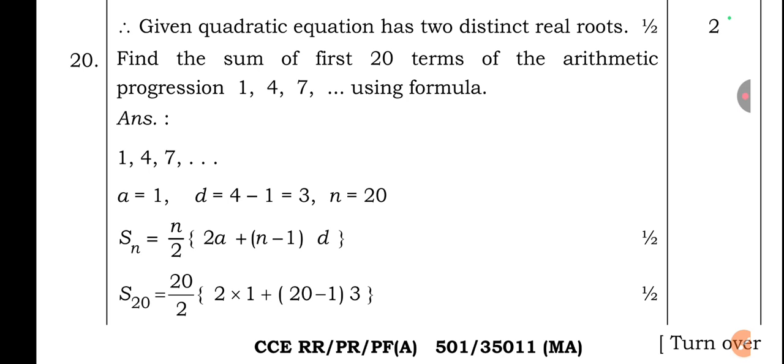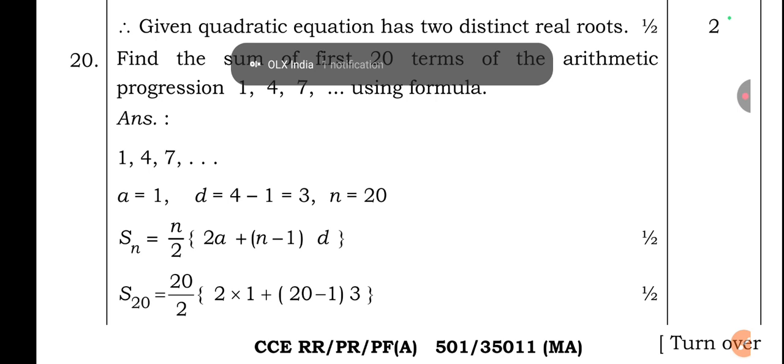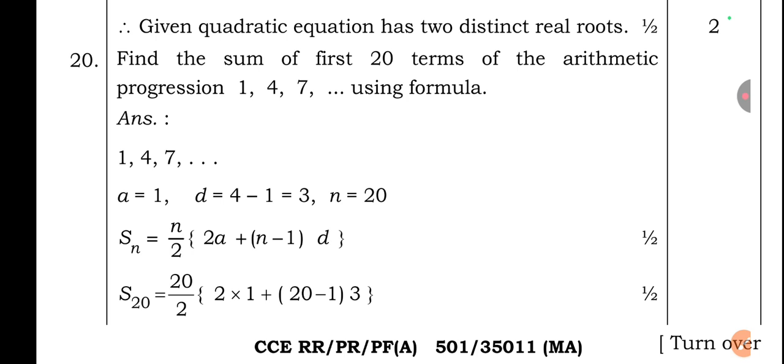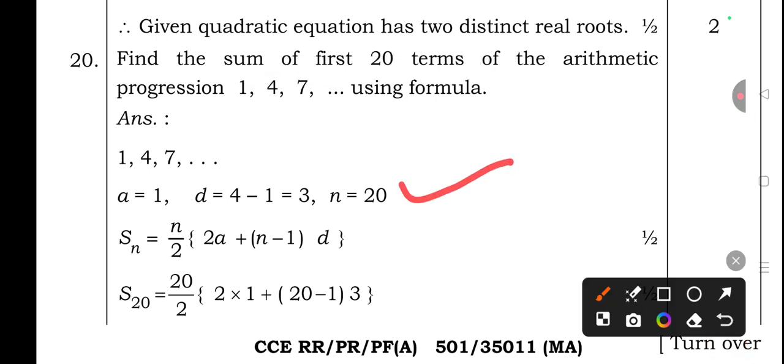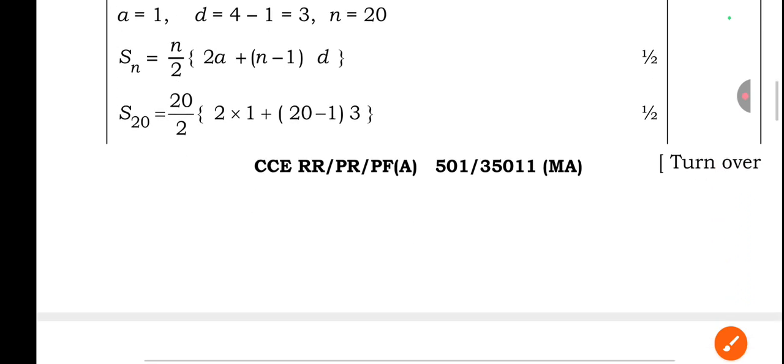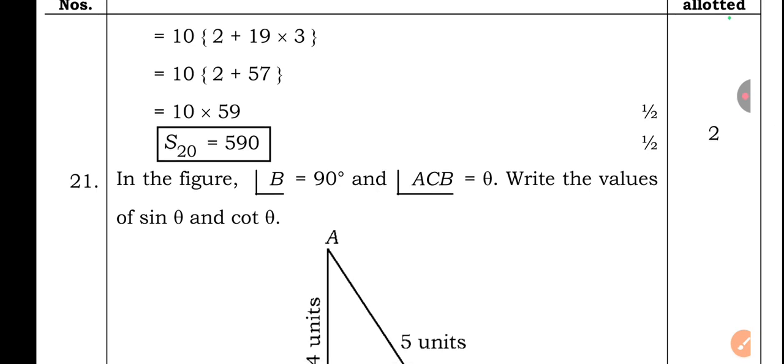Question 20: Find the sum of the first 20 terms of the AP 1, 4, 7, ... using the formula. First term a = 1, common difference d = 3, n = 20. Sₙ = n/2 × [2a + (n−1)d], so S₂₀ = 20/2 × [2(1) + 19(3)] = 10 × [2 + 57] = 10 × 59 = 590.